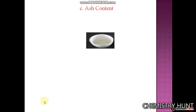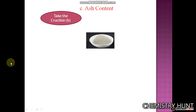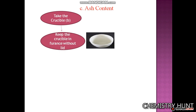For ash content, take the same crucible with the same coal sample that was used for moisture and volatile matter. From that one gram of coal sample, we have already calculated the moisture and volatile matter, and now we are going to calculate the ash content. Keep this crucible in the furnace without the lid — here we can see the crucible is uncovered.